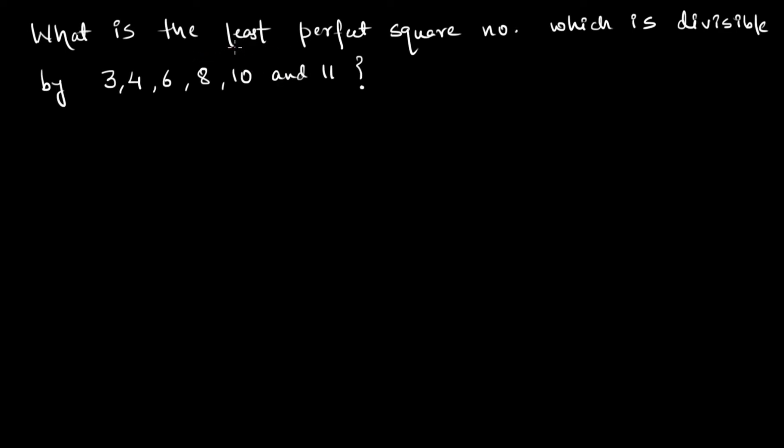We need a smallest perfect square number which is divisible by all these numbers given here. Since we are talking about a number that is divisible by all of these numbers, this implies that it should be a common multiple